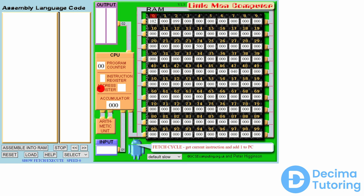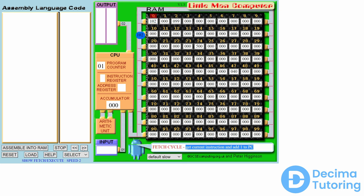When we click run, we see the fetch cycle — get current instruction and add one to the program counter. We can see one being incremented to the program counter, then the value zero goes to fetch the next instruction. The instruction here is 102. As it makes its way into RAM at memory location zero, it picks up the value 102 and brings that back to the CPU. The two is extracted from 102 and the one is also extracted: the one is placed in the instruction register and the two is placed in the address register. This is a valid instruction — the instruction is add, and it says add to the accumulator the contents of RAM address two.